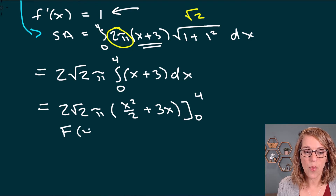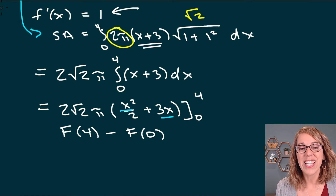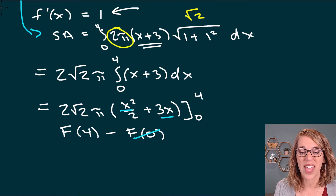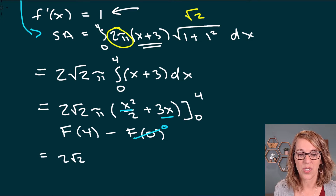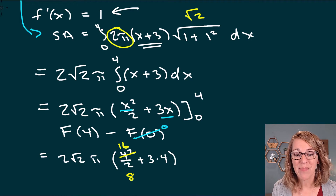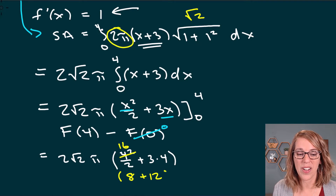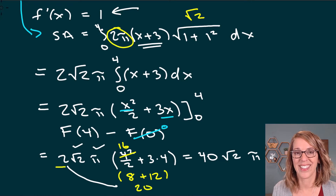We evaluate the antiderivative at 4 and subtract the antiderivative at 0. Since every term has an x, the antiderivative at 0 is just 0. At 4, we get 2√2π times (4 squared over 2 plus 3 times 4), which is 16 over 2 equals 8, plus 12, giving 20. So 2 times 20 is 40, and our final answer is 40√2π.